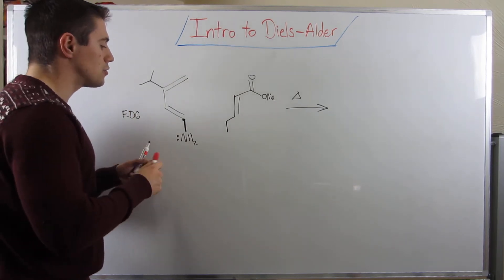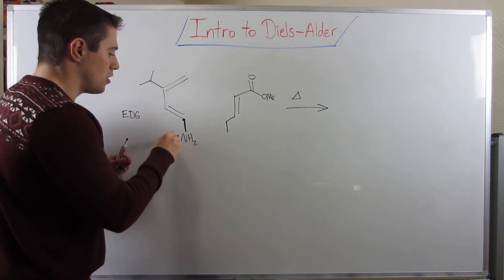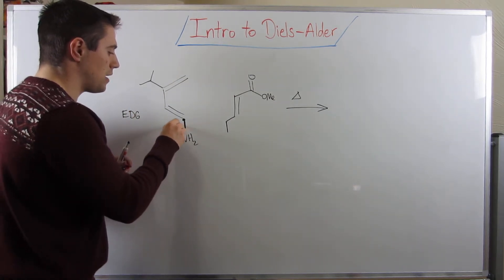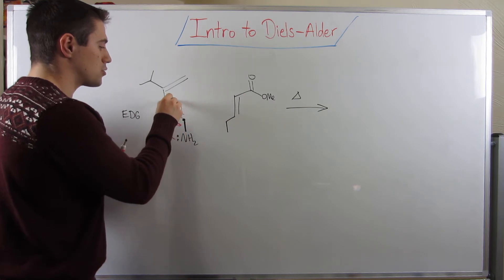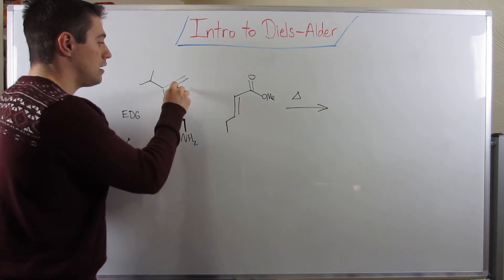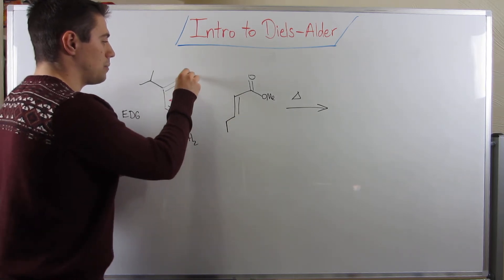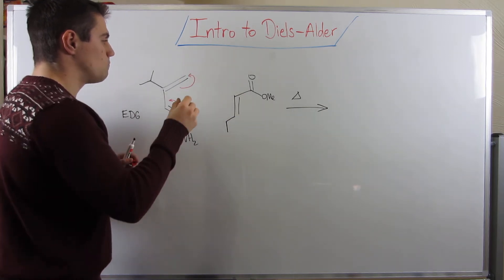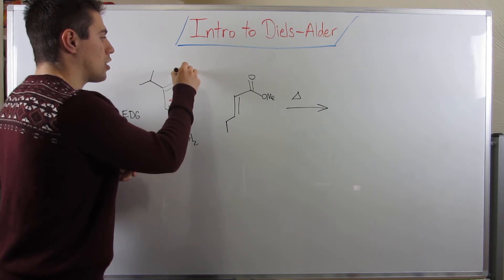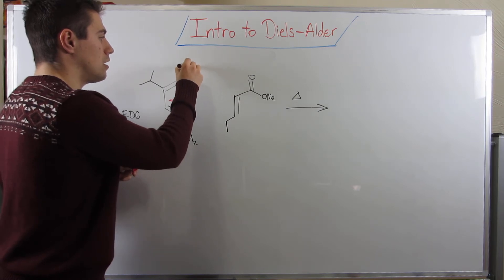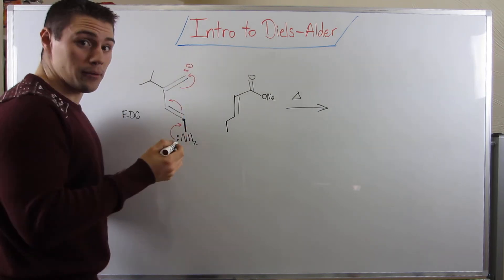If I drew the resonance where this electron pair came down, this bond swung over here, and this electron pair swung up, you can see that I'm having my negative charge up top.